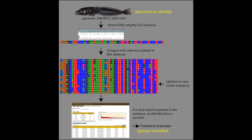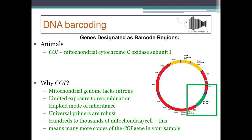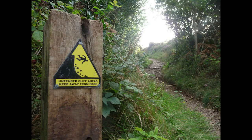Only certain sequences are suitable for barcoding because they're widely shared between different organisms, consistently have low variation within species, and have much larger variation between species. This means that if you build a database of barcoding sequences for each species, you can compare a new sequence to this database, and if it's very similar to sequences known to come from a particular species, you know the new sample is also from that species. A commonly used sequence is a 648 base pair part of the CO1 gene in the mitochondrial DNA, which is shared by all eukaryotic life.